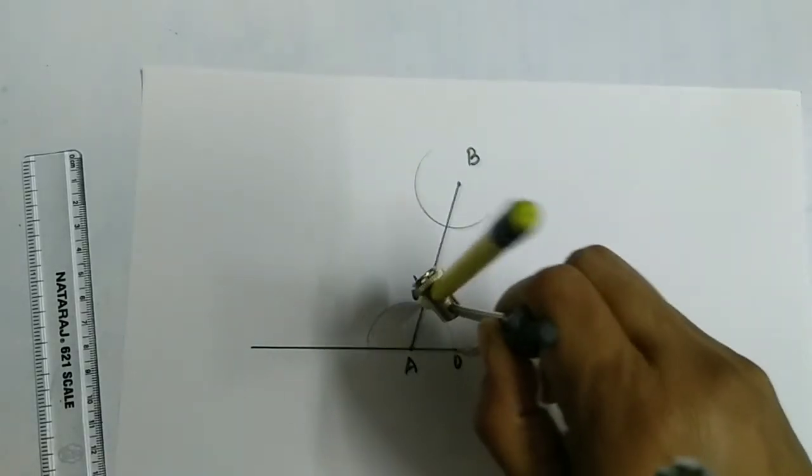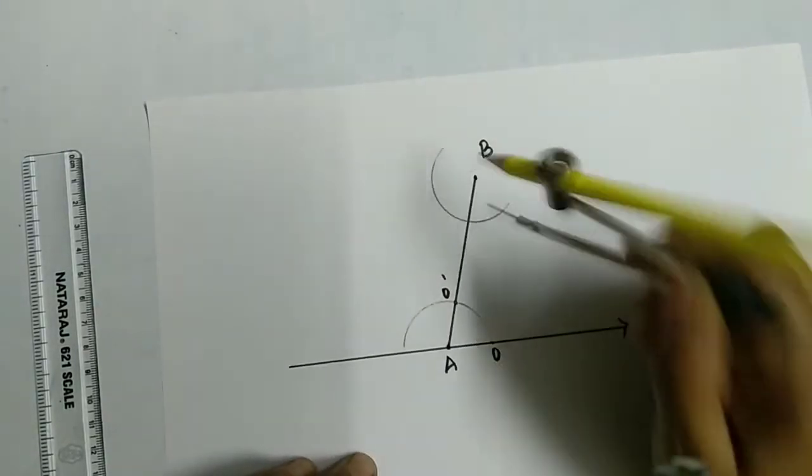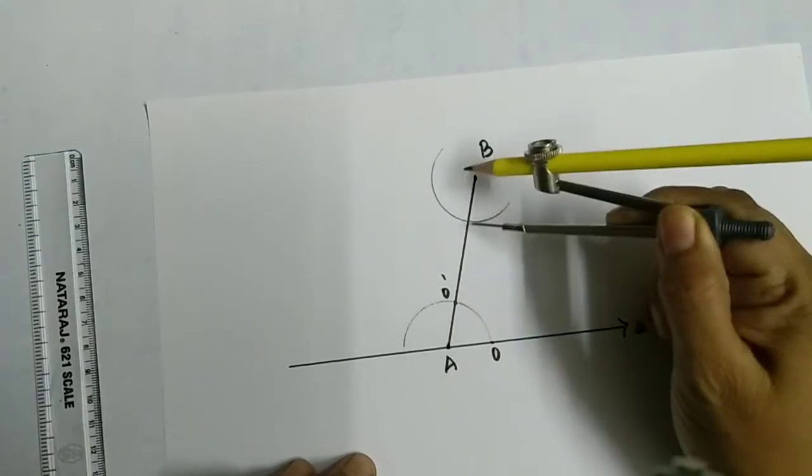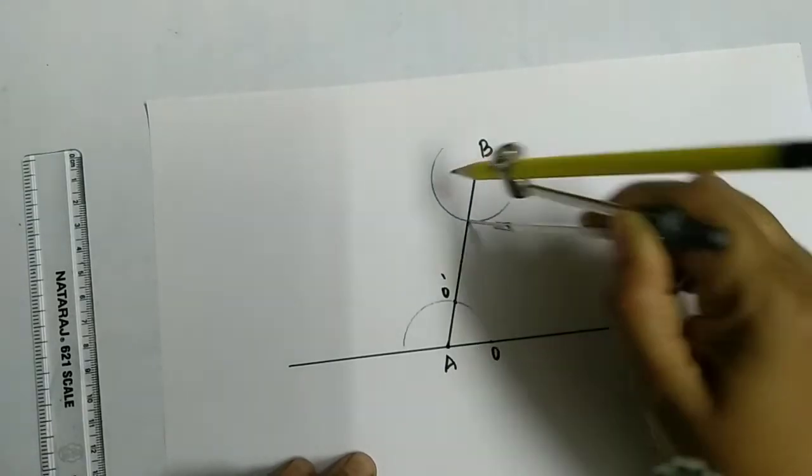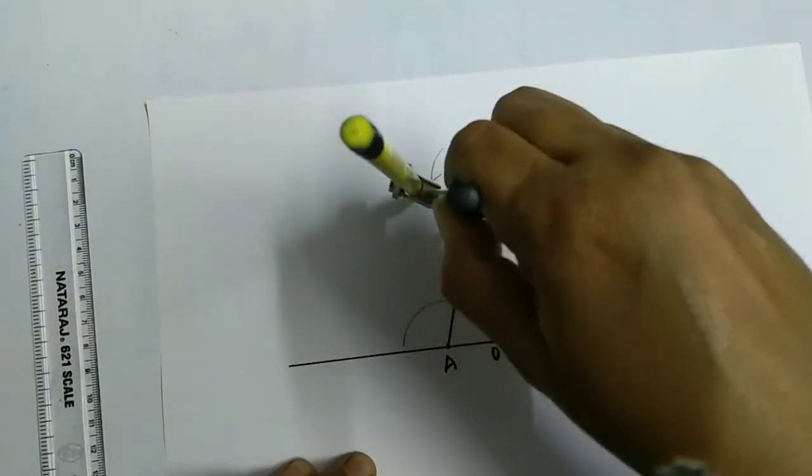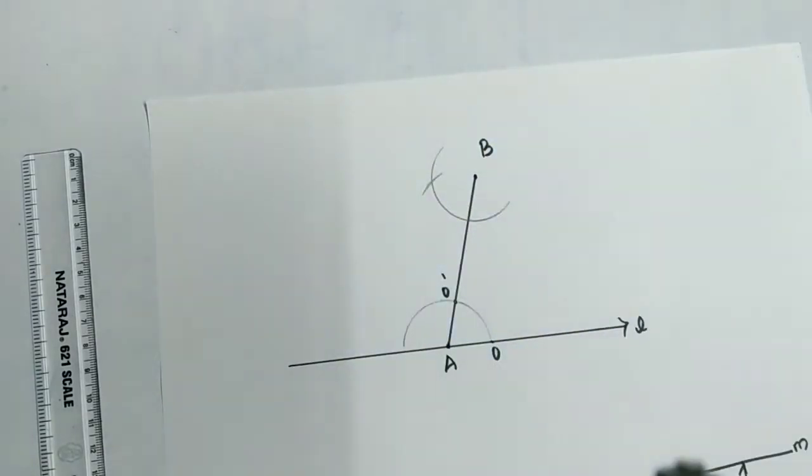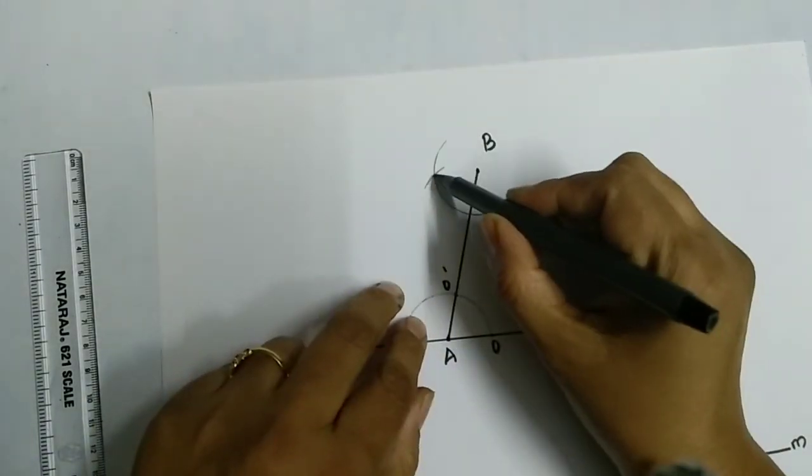Okay, now we have O and O dash. This same measurement you have to keep on this point here and cut this arc. So now you have got one point here.